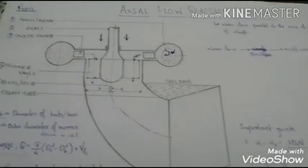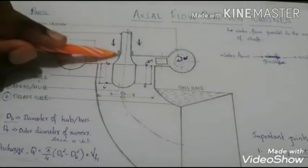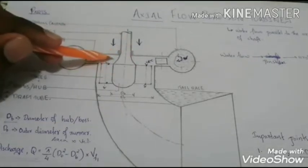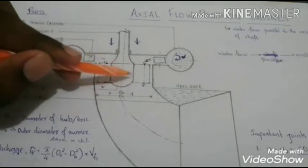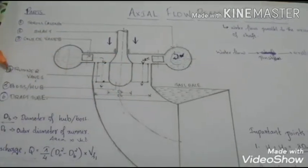Before that, let's look at the major parts of the axial flow reaction turbine. As mentioned earlier, this is the shaft and a slightly enlarged portion is seen at the bottom of the shaft and it is called the boss or the hub.